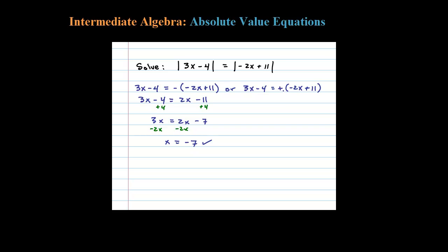Here we have plus, so we can think of that as plus 1. When you distribute that, you'll just be left with 3x minus 4 equals negative 2x plus 11. So let's go ahead and try to solve that. Adding 4 leaves us with 3x equals negative 2x plus 15. Adding 2x...